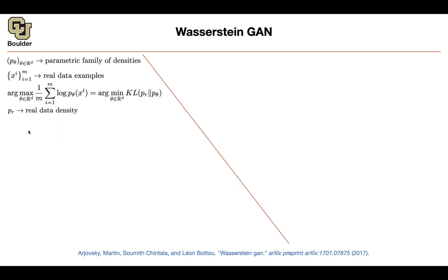For GANs, there is this simple observation: if you sample from a simple distribution and push those observations through a complex function parametrized by a neural network, you're going to be able to generate samples from a complicated distribution. What did you lose? You lost the likelihood. You can still use it, but then you'd have to do variational inference and go back to variational autoencoders, which is an approximation. So how about working directly with divergences?